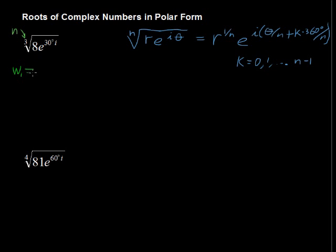So w sub 1, the first root, is the third root of 8, that's the r here, times e to the i times theta, or 30 degrees, divided by n, that's 3 again, plus 0, k is 0, the first time we go through this. So 0 times 360 degrees over 3 again, over n, and all of that simplifies to 2 times e to the 10 degrees i.